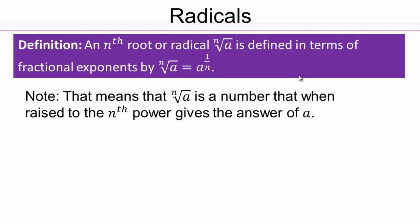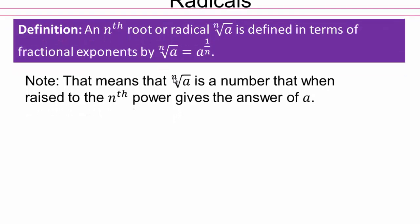So the nth root of a is a number that, when raised to the nth power, gives you a. One note: if n is 2, we leave the 2 out. If it's 3, 4, 5, or any other counting number, we put it there. So when you have a square root, the 2 is left out.